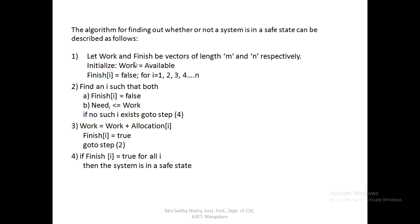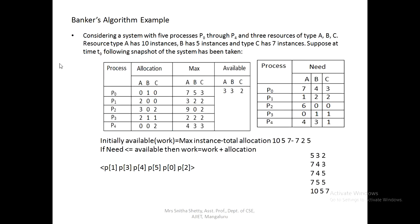Here I will explain the Banker's Algorithm. First, let's see what the inputs are. Consider a system with five processes P0 to P4 and three resource types A, B, C. The Banker's Algorithm works by first assuming the maximum instance. Each process must declare the maximum number of resources it may need. This algorithm dynamically examines the resource allocation to ensure there can never be a circular wait condition.